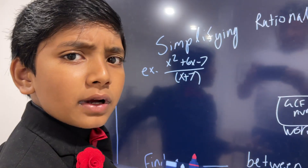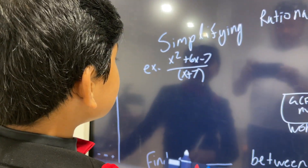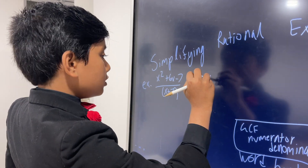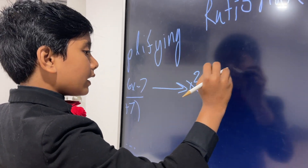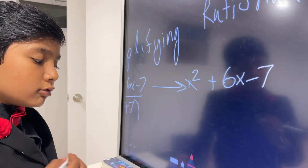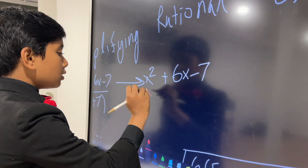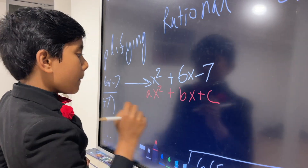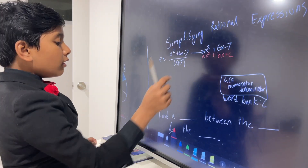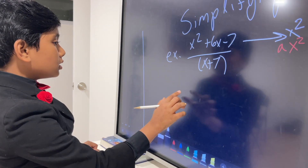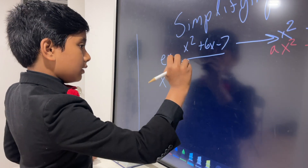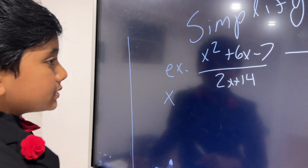How do you simplify a rational expression? Well, let's say that we have x squared plus 6x minus 7 over x plus 7. If you look pretty closely at this, you'll notice something. We have x squared plus 6x minus 7. Now let's put the regular formula for a quadratic next to that. It looks very similar, doesn't it? That means that this must be a quadratic — one that we can even solve by doing simple factoring.